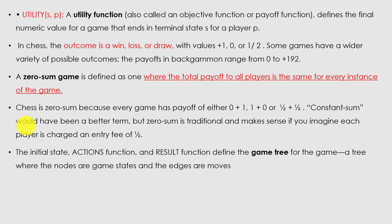The initial state, actions function, and result function define a game tree. For a game, a tree whose nodes are game states and edges are the moves. To understand AI-based games, the entire concept — initial state, actions, moves, functions, and final result — is represented as a game tree. In this tree structure, game states represent nodes and moves represent edges.